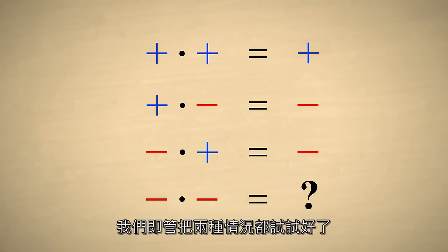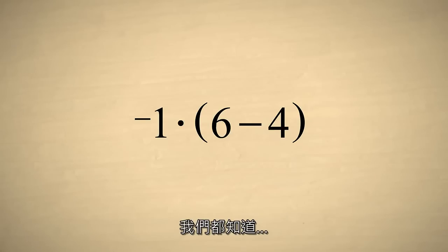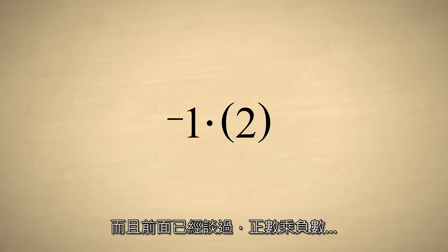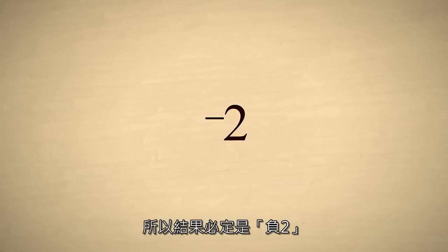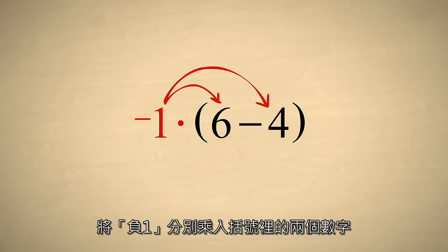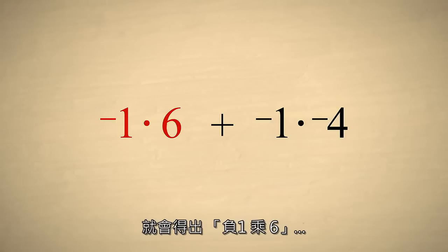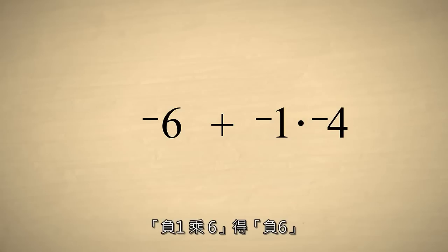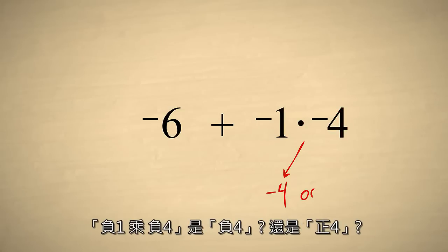Let's try it both ways and see what happens. Let's multiply (6 minus 4) times negative 1. We know what the answer should be: 6 minus 4 is 2, and we have already shown that the product of a negative and positive number must be negative, so the answer must be negative 2. But instead, let's use the distributive property and multiply negative 1 times each number in the parentheses separately. We then have negative 1 times 6 plus negative 1 times negative 4. We know that negative 1 times 6 is negative 6, but we don't know what sign the product should be when we multiply two negative numbers.